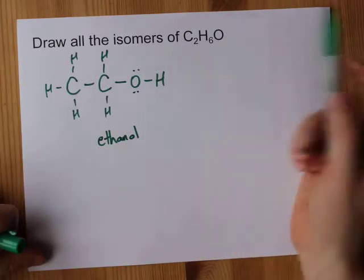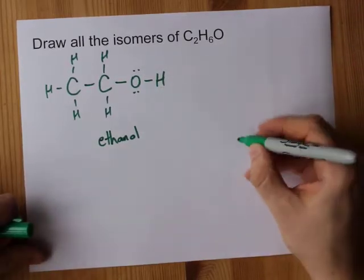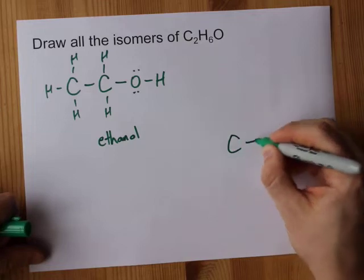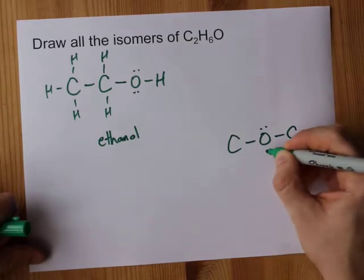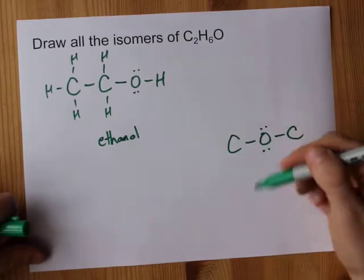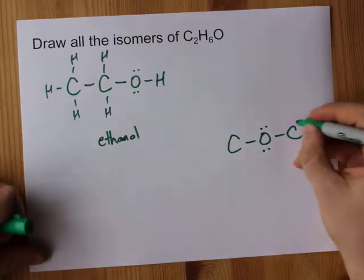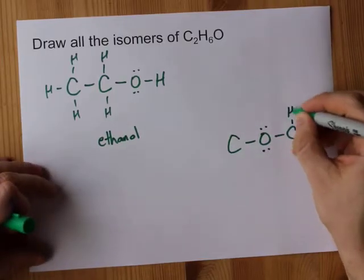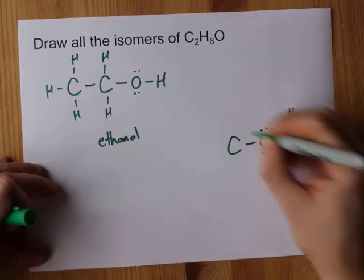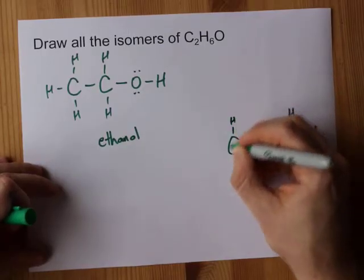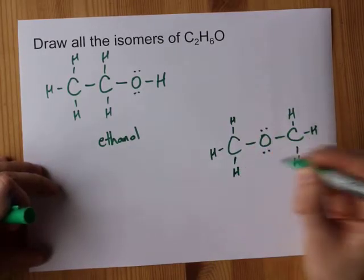The only other place the oxygen can go — which some students forget about — is in between the two carbons. Since oxygen can have two bonds, it can split up the carbon chain as well. That gives us six hydrogens and a complete C2H6O structure.